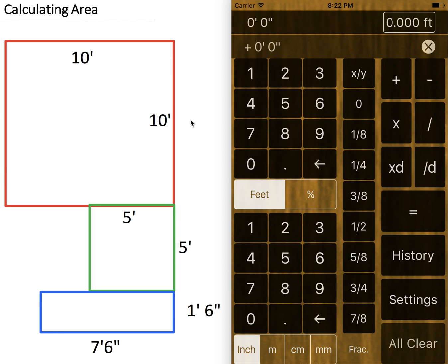Let's go ahead and calculate an area. We'll start with the red square, then the green square, followed by the blue square.